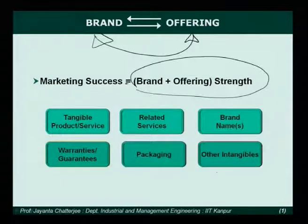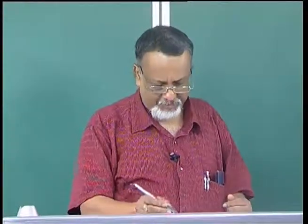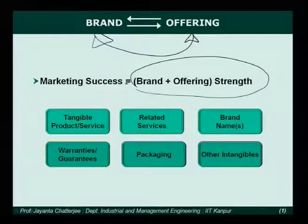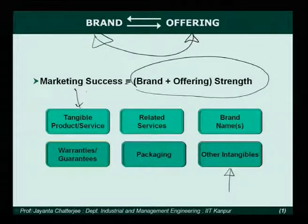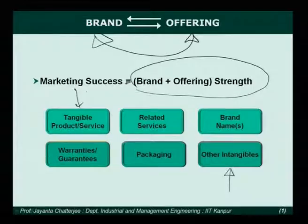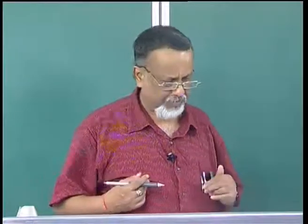When we talk about tangible elements, these are the things we normally associate with product in the four P's or marketing mix — the shape, color, size, weight, features, benefits — all those tangibly definable aspects of the product and services. On the other hand, there are intangible elements of the offering, which are things like the emotional evocation from the product, the sense of presence of the product or service.